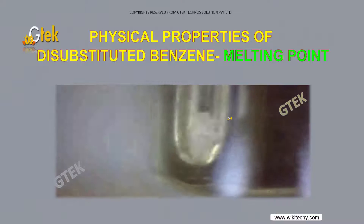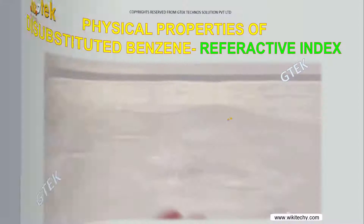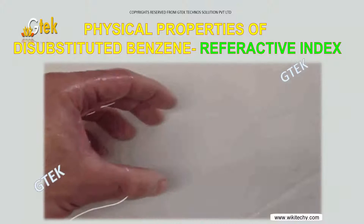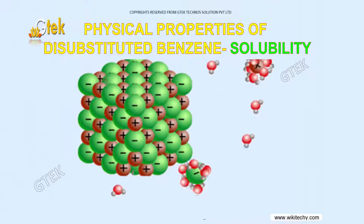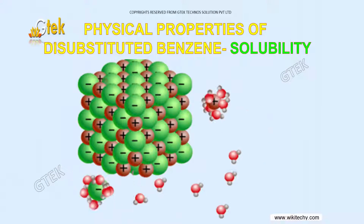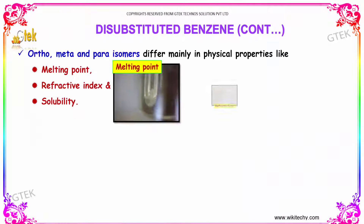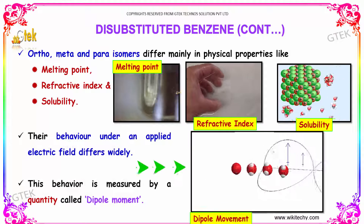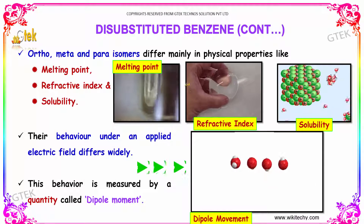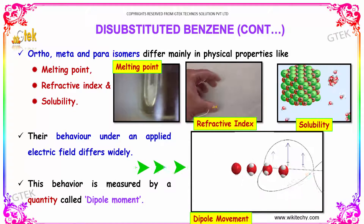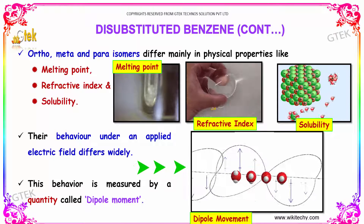Melting point is an important physical property of disubstituted benzene. Moreover, refractive index and solubility are also the main properties of disubstituted benzene. Ortho, meta, and para isomers differ mainly in physical properties like melting point, refractive index, and solubility.